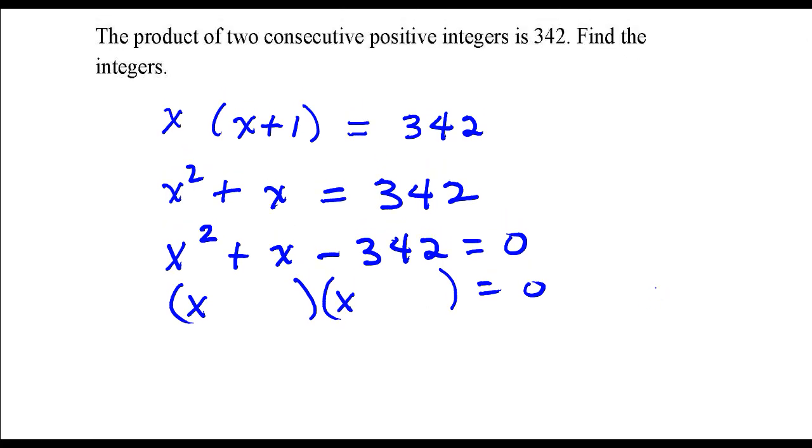So let me write the prime factorization of 342. I'll divide by the first prime number. It's divisible by 2. It's going to be 171. And 171 is not divisible by 2, but it is by 3.